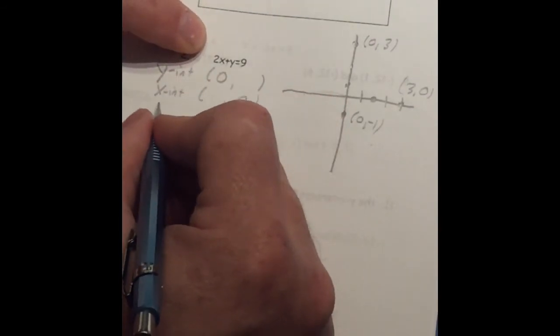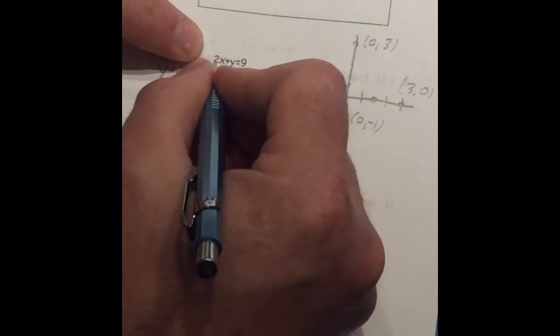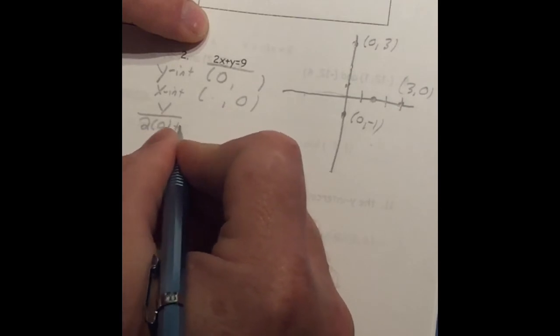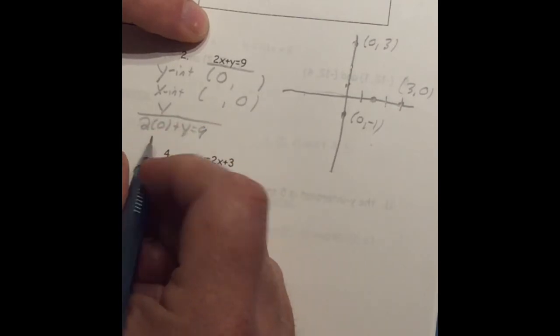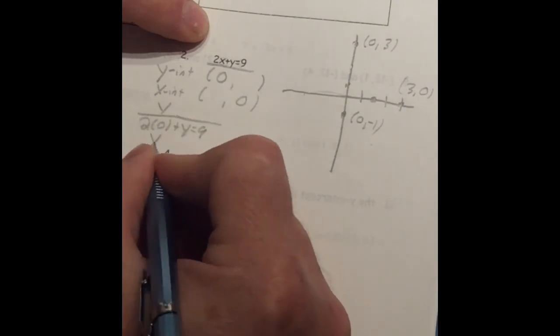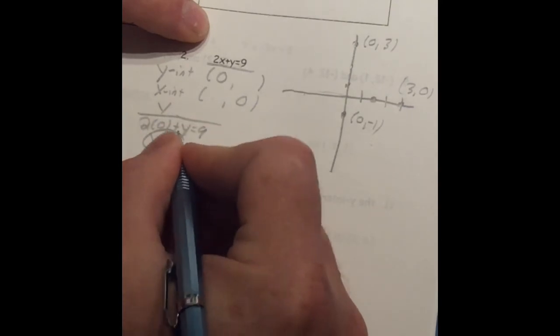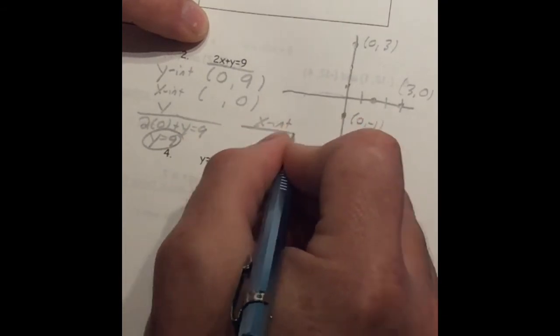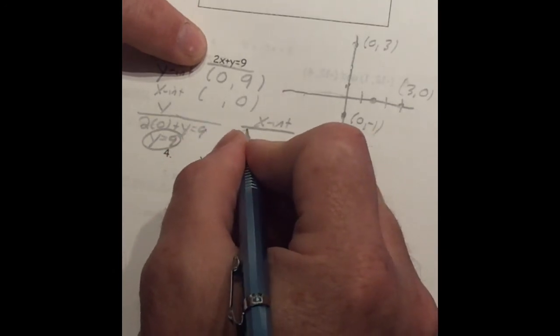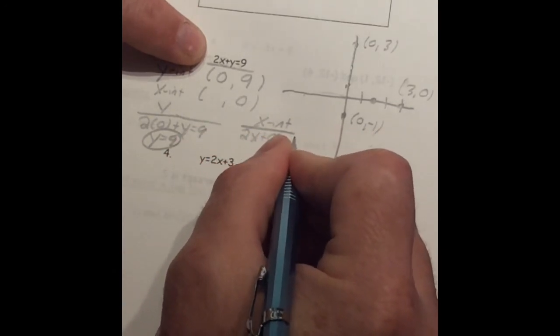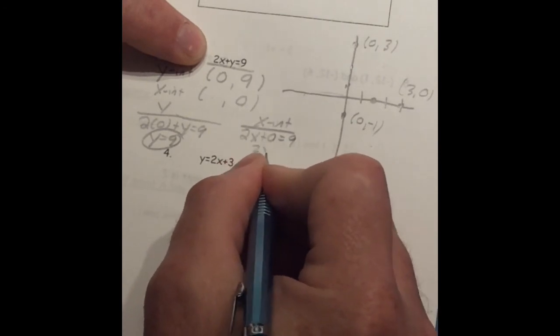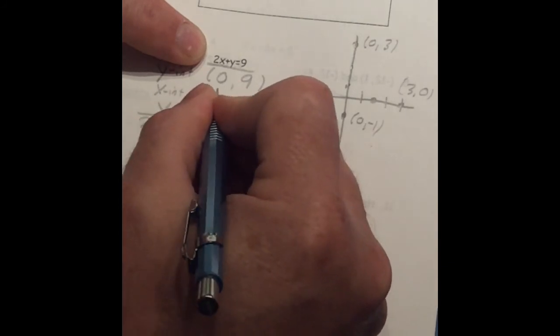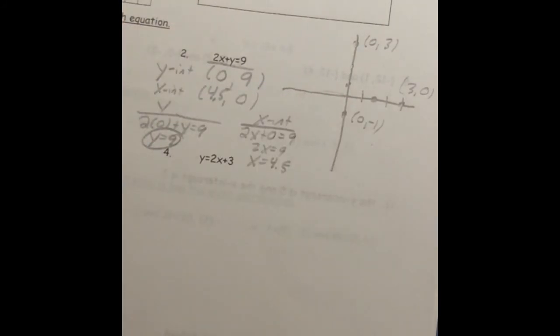Watch me solve this guy right here. So for my Y intercept, I'm going to take this equation right here. I'm going to plug in a 0 for my X. All right. Well, 2 times 0 is just 0. So this is Y equals 9. That's my Y intercept. And for my X intercept, I'm going to plug in a 0 for my Y, which is 2X plus 0 equals 9, which gives me 2X equals 9. If I divide by 2, X equals 4.5.